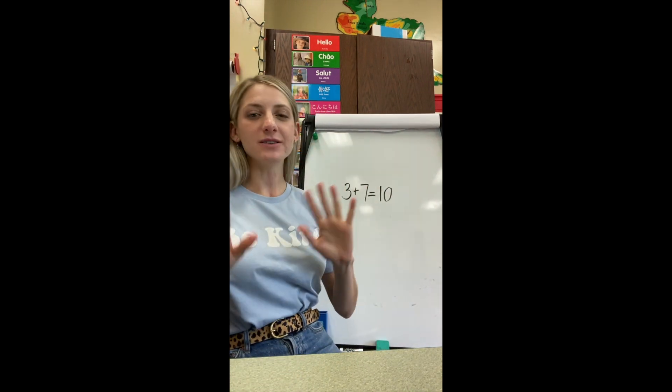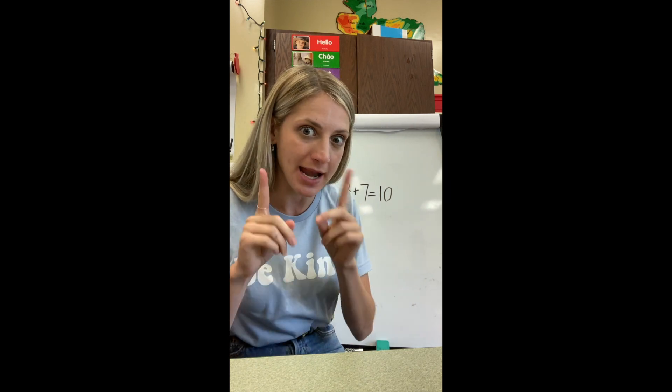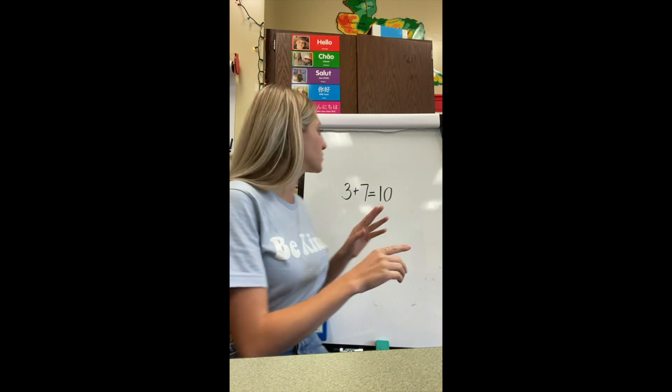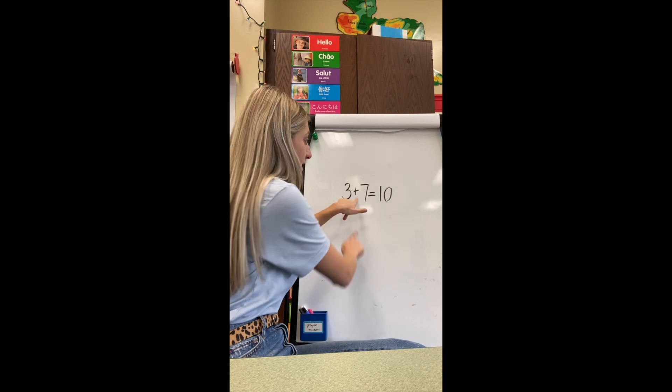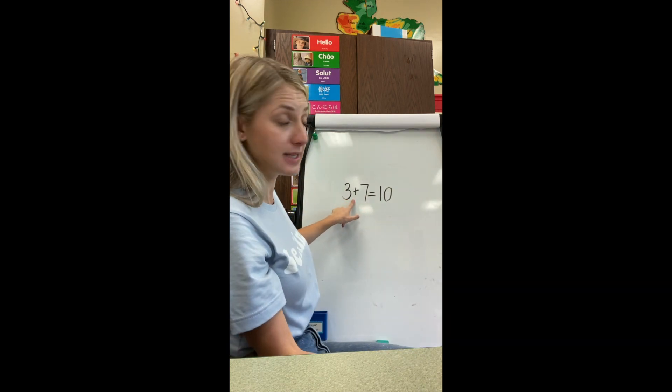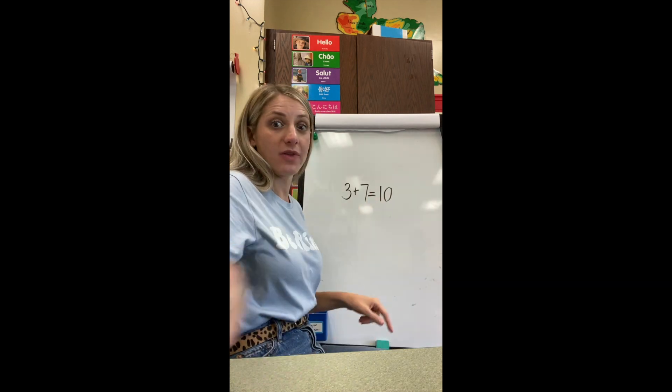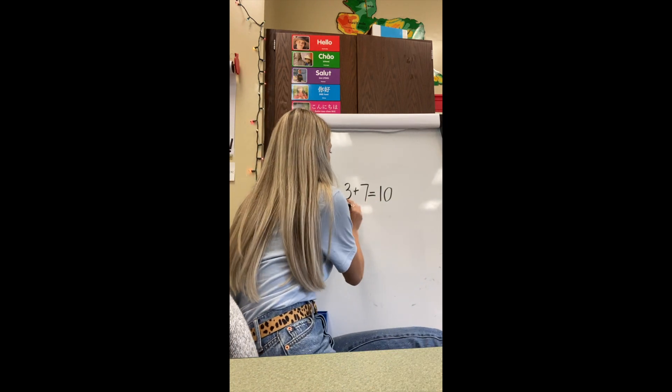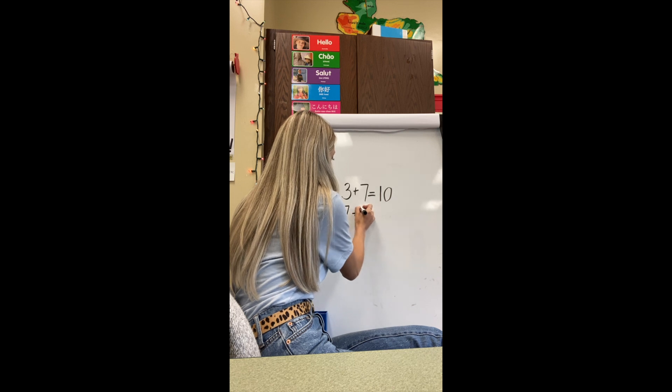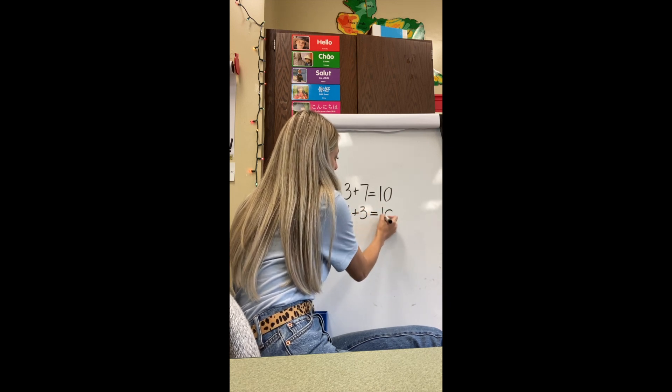Good job. Now we've kind of done this a little bit before, but we haven't put a name to it. So today we're going to put a name to it. Hands up — say commutative property. Commutative property is when you switch the two parts in an addition sentence, and it still equals the same thing. For example, if I put the seven first and the three next, it still equals 10. Commutative property.